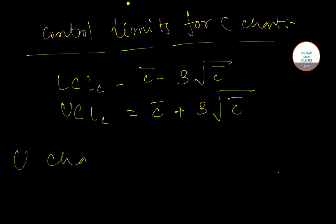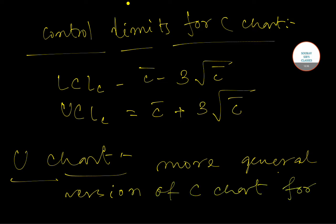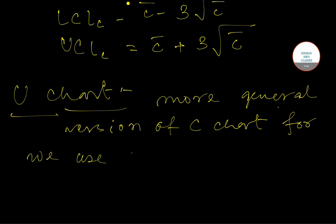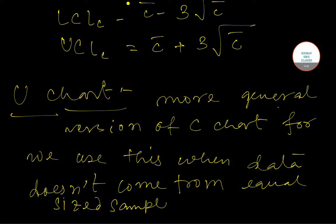U-chart is a more general version of C-chart. We use U-chart when the data points do not come from equal-sized samples. As you know, in the case of C-chart we always need samples that are equal in size. But in the case of U-chart, we can calculate data points for samples which are not equally sized.